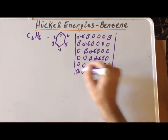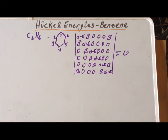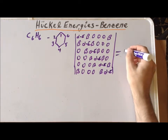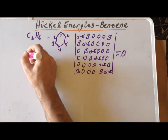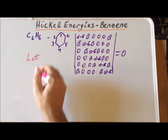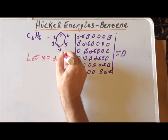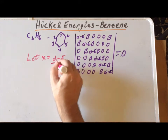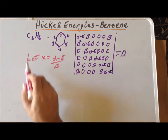We set this secular determinant equal to zero and solve for the energy E. As we have done in previous cases, we are going to make the assignment of the variable x to be equal to alpha minus the energy divided by beta. So first, we divide through the entire determinant by beta, and then we make this particular assignment.